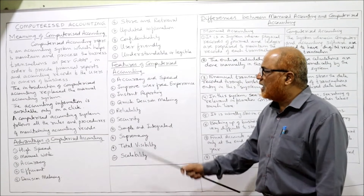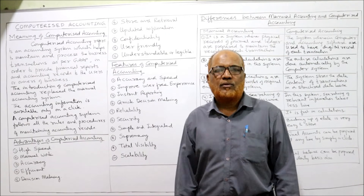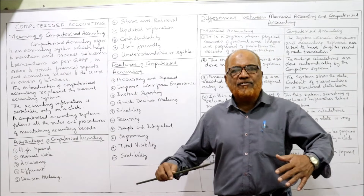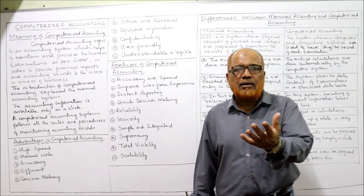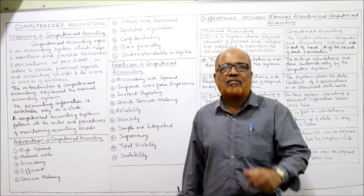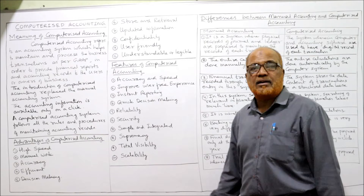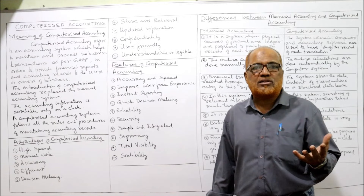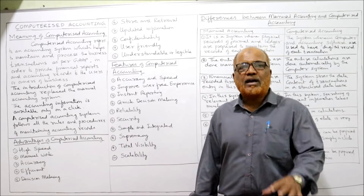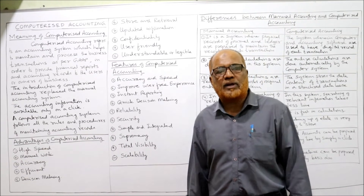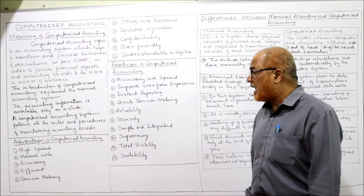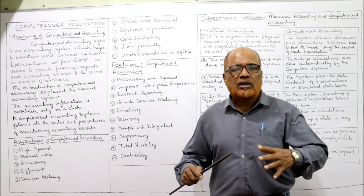The third feature is instant reporting — just by a click of the mouse, we can get instant reports on different aspects of accounting. The fourth feature is quick decision making — because information is generated so fast, accounting information is available at any time, enabling management to take prompt and efficient decisions. The fifth feature is reliability — reports are more accurate and prompt, so reliability of accounting information is high when accounts are maintained on computers. The sixth feature is security — foolproof security can be maintained using passwords and login information.